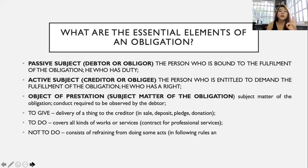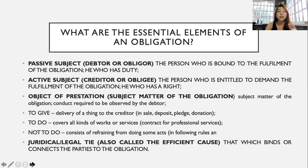The fourth essential element is the juridical or legal tie, also called the efficient cause. It is the one which binds or connects the parties to the obligation. The tie in an obligation can be easily determined by knowing the source of the obligation. These sources of obligation will be discussed shortly, but there are many sources and the obligation can come from any of them, which creates the juridical or legal tie.